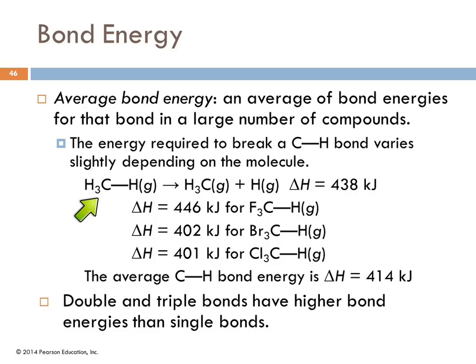So if we're looking here at a carbon-hydrogen bond, if it's in methane, the bond energy is 438 kilojoules. If it's in trifluoromethane, the bond energy is 446. If we change fluorine to bromine, we've got 402. And trichloromethane is 401 kilojoules. So the energy of the carbon-hydrogen bond is going to vary a little depending on what compound it's in.